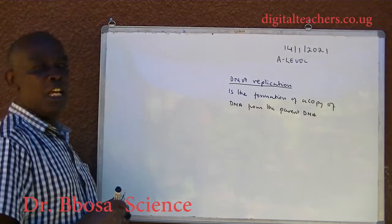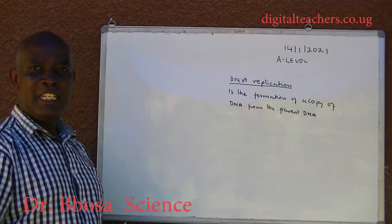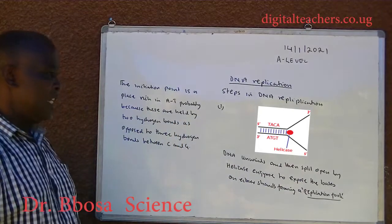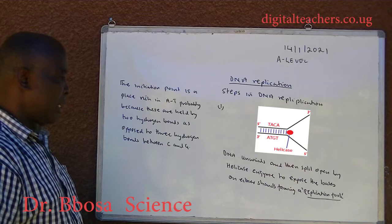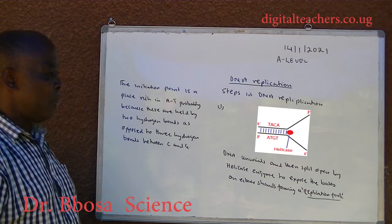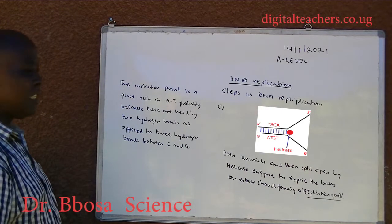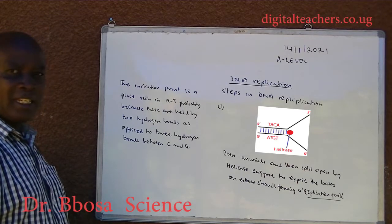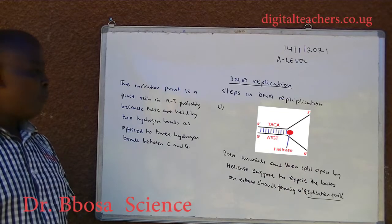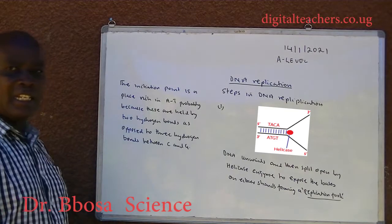DNA replication is the formation of a copy of DNA from parent DNA. Step 1: DNA unwinds and then spreads open by a helicase enzyme to expose the bases on either strand, forming a replication fork. The initiation point is a place rich in adenine-thymine base pairs, probably because these are held by two hydrogen bonds, as opposed to three hydrogen bonds between cytosine and guanine.